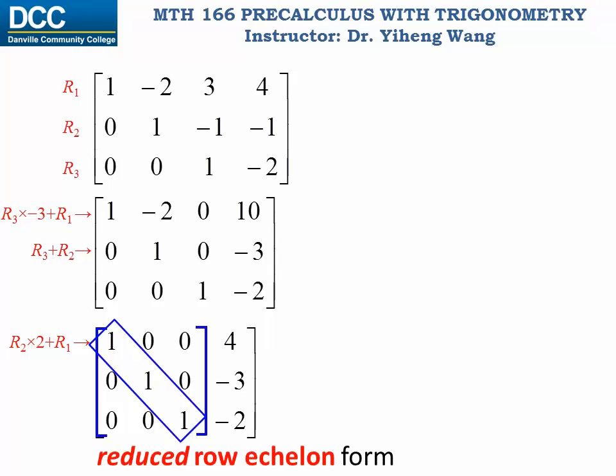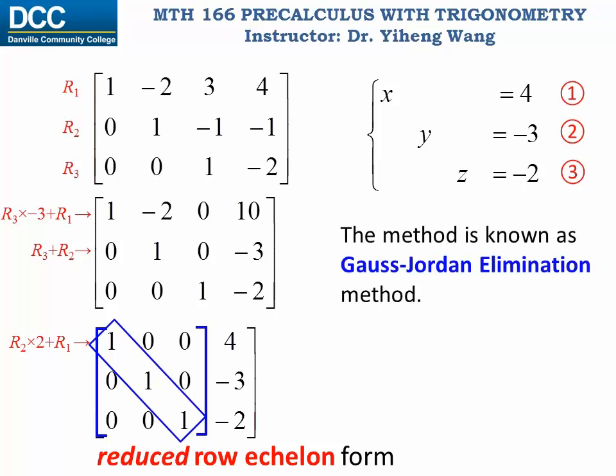This form is known as the reduced row echelon form. Just like we were able to create the matrix from the system of equations, now we can translate this matrix back into a system of equations. And what we get is simply x equals 4, y equals negative 3, and z equals negative 2. If you can transform your matrix into the reduced row echelon form, you are able to read the solution to your system of equations directly. So this method — using the matrix, transforming it into the reduced row echelon form, and reading the solution directly — is known as the Gauss-Jordan elimination method.